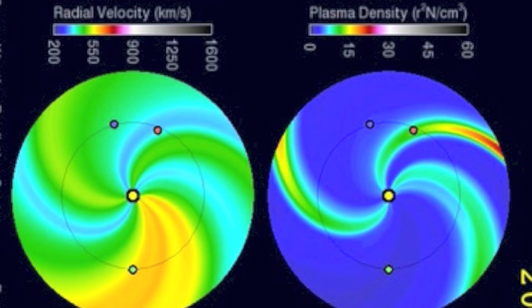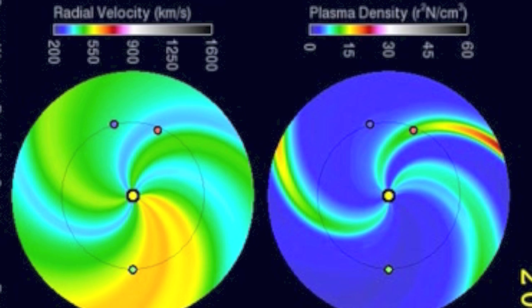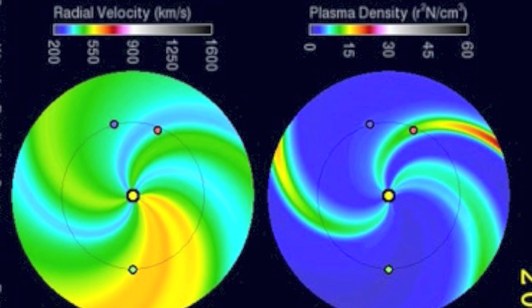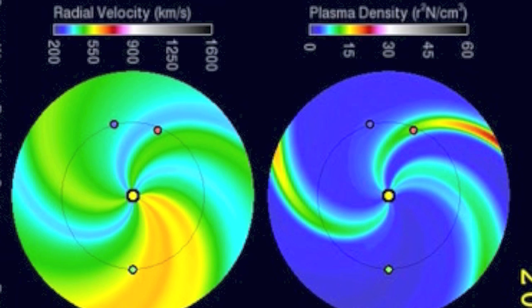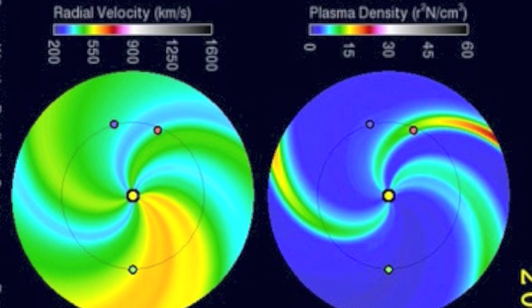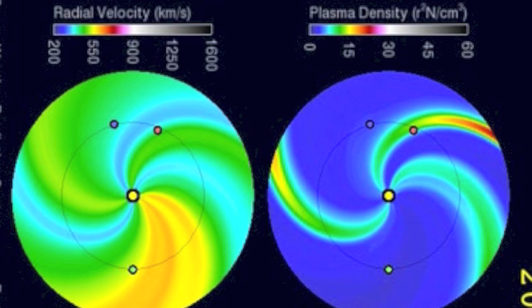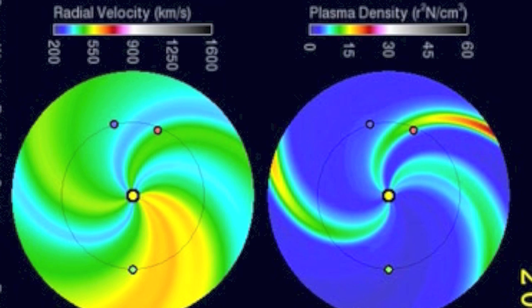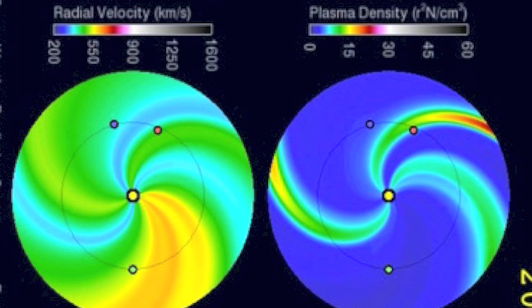The faster coronal hole stream catches up to slower solar wind out ahead of it, and bunches up the particles just like snow bunched up on a shovel.